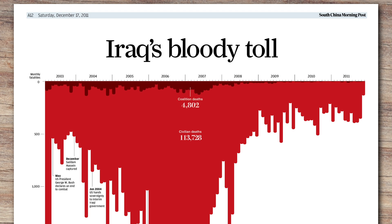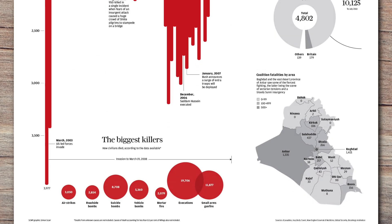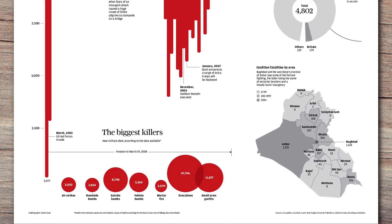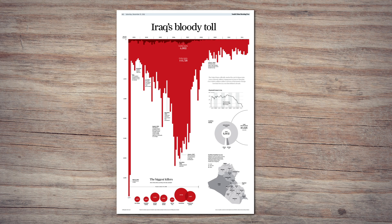There are other annotations that help put the numbers into context, like the bubbles on the bottom showing what killed the most civilians — airstrikes, suicide bombs, executions, and so on. There's also data about coalition fatalities on the right, broken down by country and where within Iraq they were killed. This is a full-page news graphic that was made to draw you in and then allow you to learn more as you explore it further.